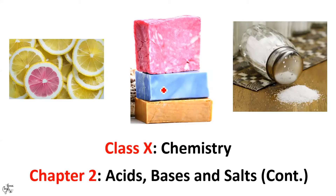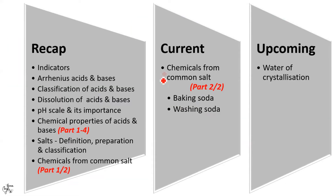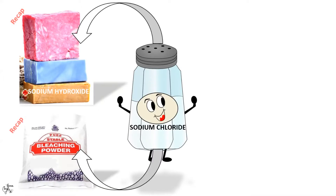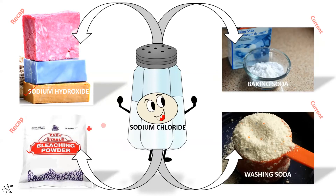Hello students, I am Dr. Seema Singh and you are watching my channel Bonding with Chemistry. In today's video, I will continue with the topic: some important chemicals that can be obtained from common salt. In my next video, I will wind up this chapter by taking a small but significant topic which is water of crystallization. Stay tuned to my channel by hitting the bell icon for latest updates and please subscribe. In my previous video, I took up two chemical compounds namely sodium hydroxide and bleaching powder. In this video, I will take up the remaining two: baking soda and washing soda. Both these compounds are very important from an examination point of view, as there can be direct as well as reasoning or HOTS questions from here.